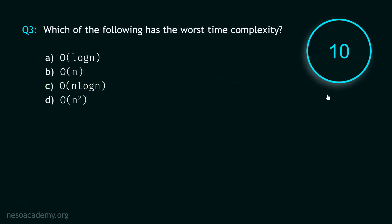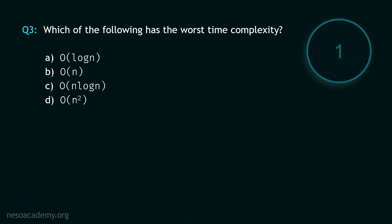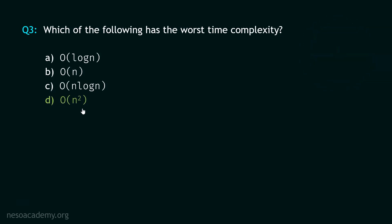Now let's move to question number 3. Your time starts now. Stop. Out of these time complexities, which is the worst time complexity? Clearly it is O(N²), and hence option D is the correct option. Now let's move to question number 4.